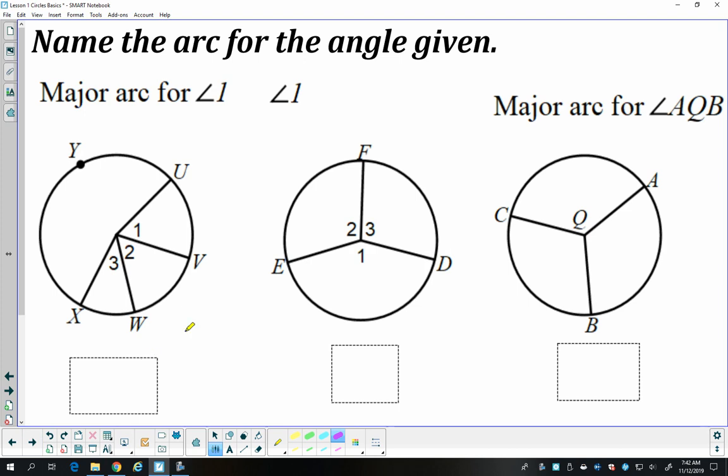So let's name some arcs for angles. So I want to name the major arc for angle 1, so that means I want an arc that's bigger than 180 degrees. Angle 1 is formed by these two radii. There's angle 1. And arc UV would be the minor arc associated with angle 1. But I want to know the major arc. So I'm going to start at U, go towards Y, and then I'm going to go all the way around to V.